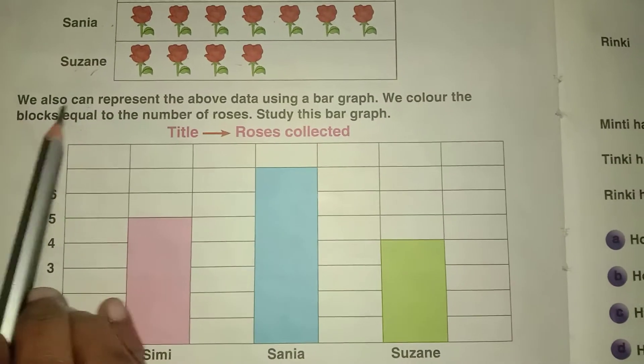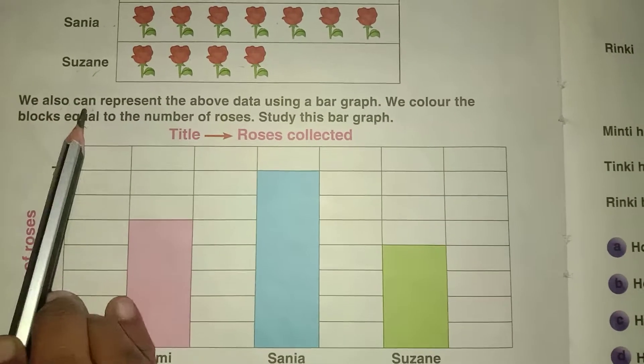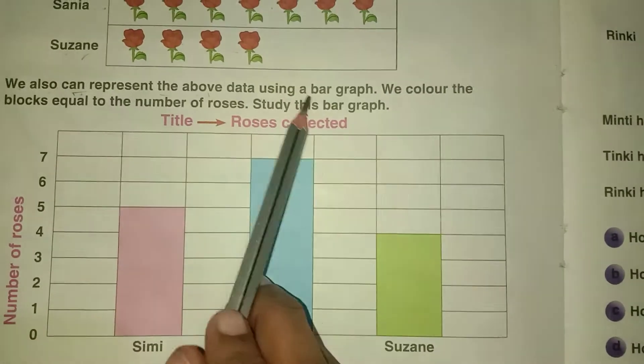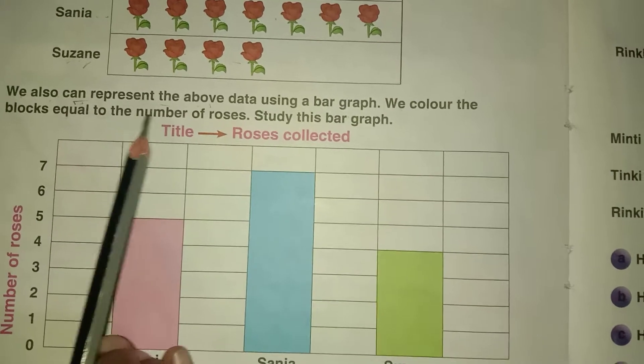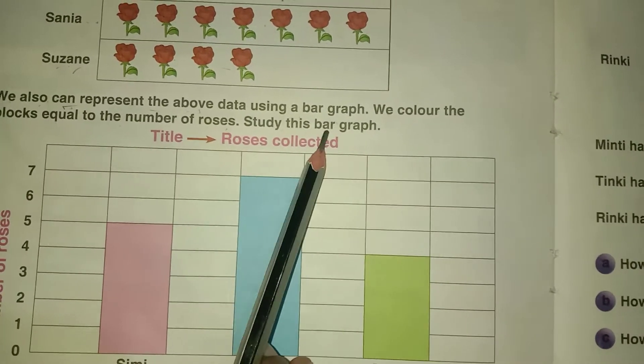See here, we can also represent the above data using a bar graph. We color the blocks equal to the number of roses. Study this bar graph.